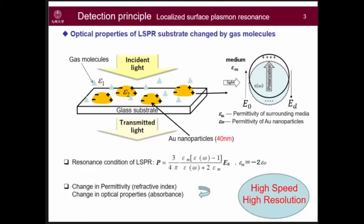The permittivity of the gold nanoparticles themselves and the permittivity of the surrounding media are changed by gas molecules. Under this resonance condition, the resonance reaches its maximum and the optical properties — transmittance, reflection, and scattering — are changed. With these gold nanoparticles at the 40-nanometer scale, when used as a two-dimensional sensor, it can achieve high resolution.